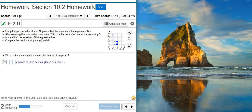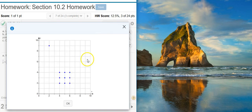Part A asks us for the regression line for all ten points that are shown on the scatterplot. Let's blow this scatterplot up a little bit so we can see a little bit better what we're dealing with here.